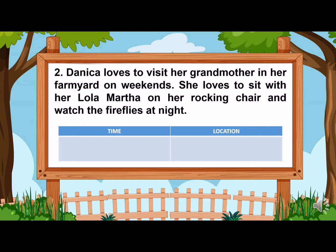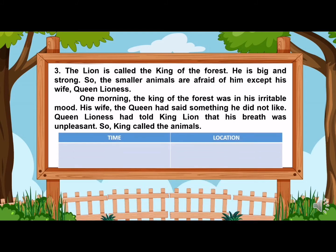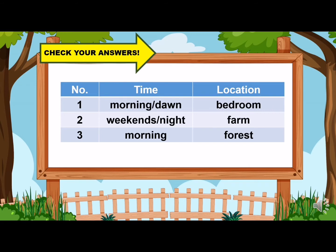Now let us have item number three. The lion is called the king of the forest. He is big and strong, so the smaller animals are afraid of him, except his wife, the queen lioness. One morning, the king of the forest was in an irritable mood. His wife, the queen, had said something he did not like — queen lioness had told king lion that his breath was unpleasant. So, king lion called the animals. Write the time and location. Now, let us check your answers. For item number one, the time is morning or dawn and the location is bedroom. For number two, the time is weekends or night and the location is the farm. And for item number three, the time is morning and the location is forest.